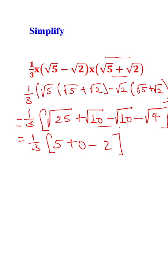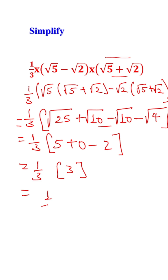This equals one-third into (5 minus 2), which is one-third into 3. Three divided by three equals one. The result is 1. So in any case, if you have such forms, take note of this.